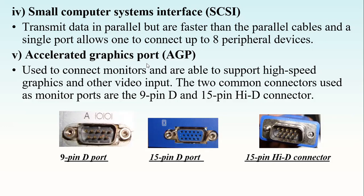Number five is the Accelerated Graphics Port, abbreviated as AGP. These are used to connect monitors and support high-speed graphics and video input. The two common connectors used as monitor ports are the 15-pin D connector. To understand port naming: if a port is named 9-pin D, it means counting the pins gives you nine, and the shape is D-shaped. Looking at the 9-pin D port, you can count nine pins arranged in a D shape.